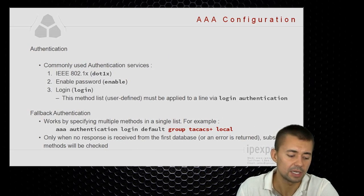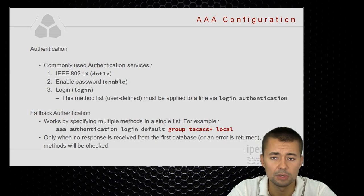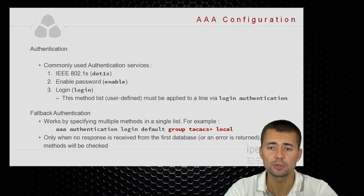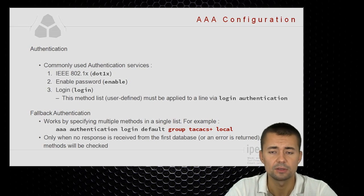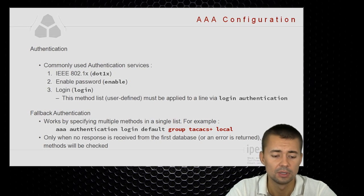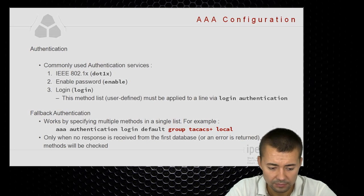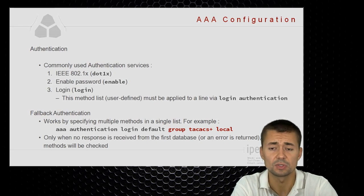Now let's take a closer look at authentication. The three commonly authenticated services are: 802.1X (WMX), which we'll probably configure on switches; the login service, for shell access on switches and routers; and authentication for the enable password, which controls access to privileged mode via the enable command. If a method list for login is not the default, we will have to apply it under the line configuration using the 'login authentication' command.